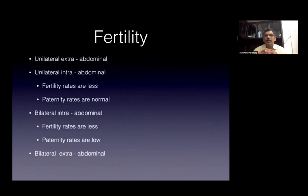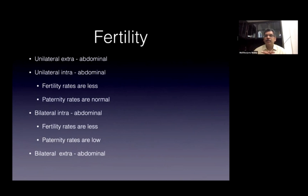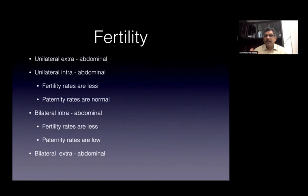What happens to children with testicular mal-descent as far as fertility is concerned? In a unilateral extra-abdominal testes, fertility is almost the same as normal. In unilateral intra-abdominal testes, fertility rates are less, but paternity rates are normal — meaning sperm counts are lower, but paternity rates are comparable to normally descended testes. In bilateral intra-abdominal testes, both fertility and paternity rates are low. Bilateral extra-abdominal behaves like unilateral intra-abdominal.